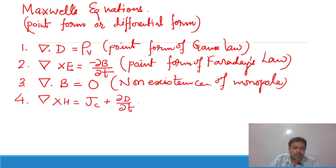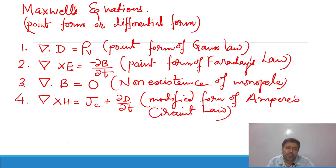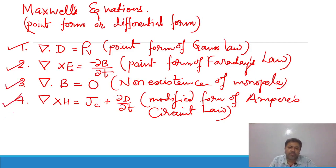Jd means ∂D/∂t, which is the modified form of Ampere's circuit law. These are the four Maxwell's equations, which are very important and highly applicable — especially when we discuss transmission lines, electromagnetic wave propagation, and antennas. The first is Gauss's law, the second is Faraday's law, the third is non-existence of monopole, and the fourth is the modified form of Ampere's circuit law.